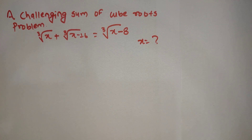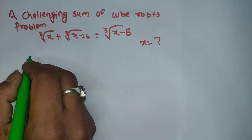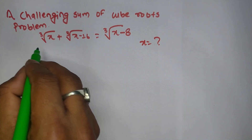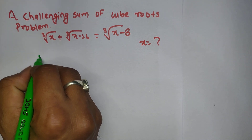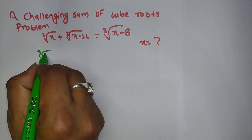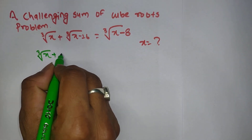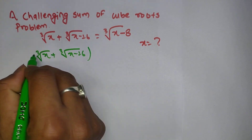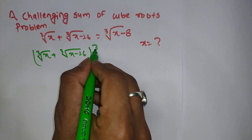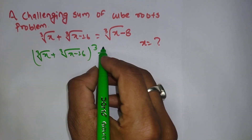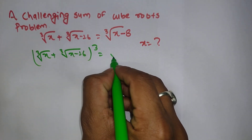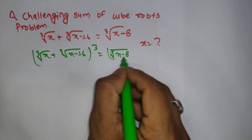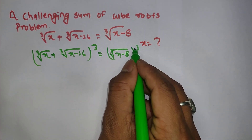To find the solution, we are going to cube both sides — that is, cube root of x plus cube root of x minus 16, the whole to the power 3 on the left side, and cube root of x minus 8 to the whole power 3 on the right side.